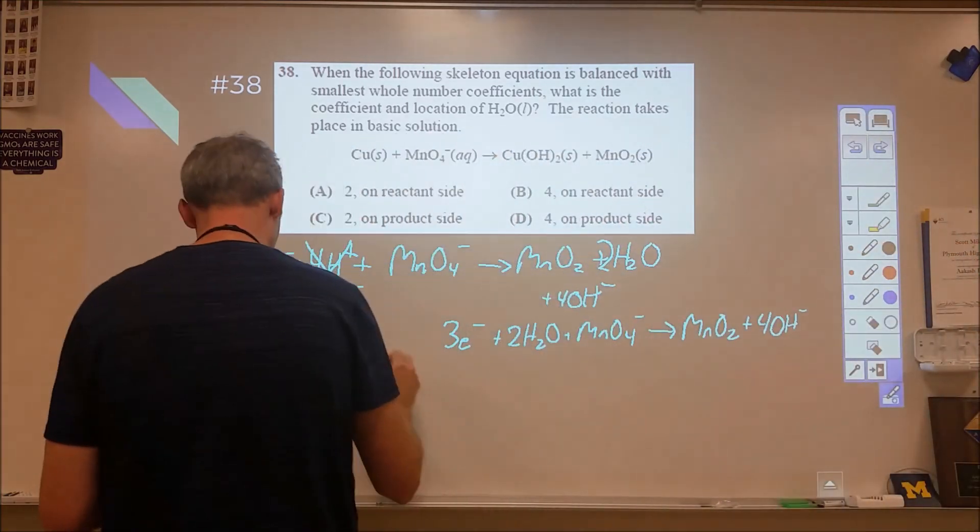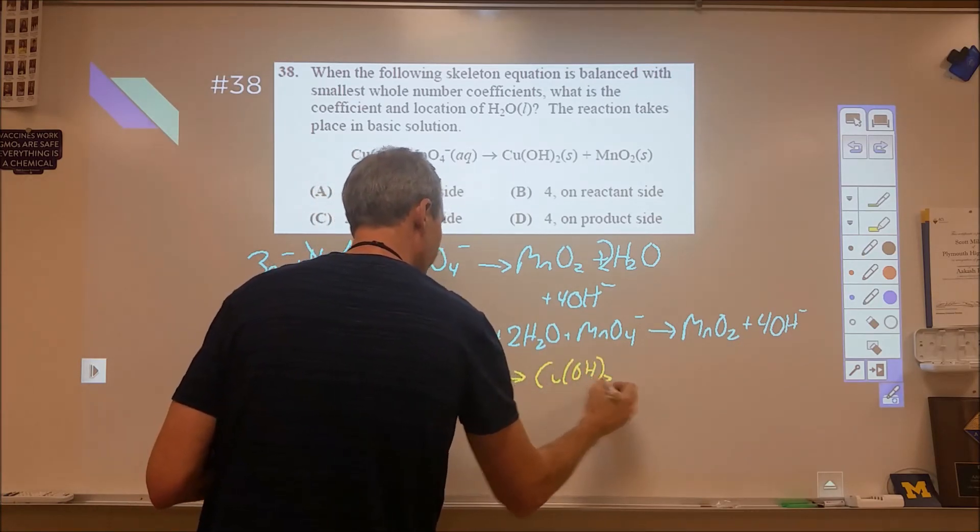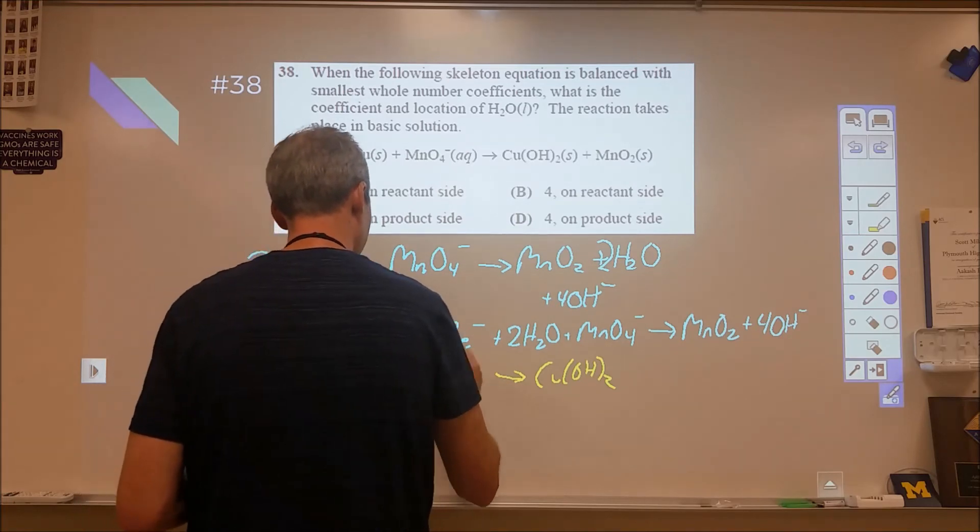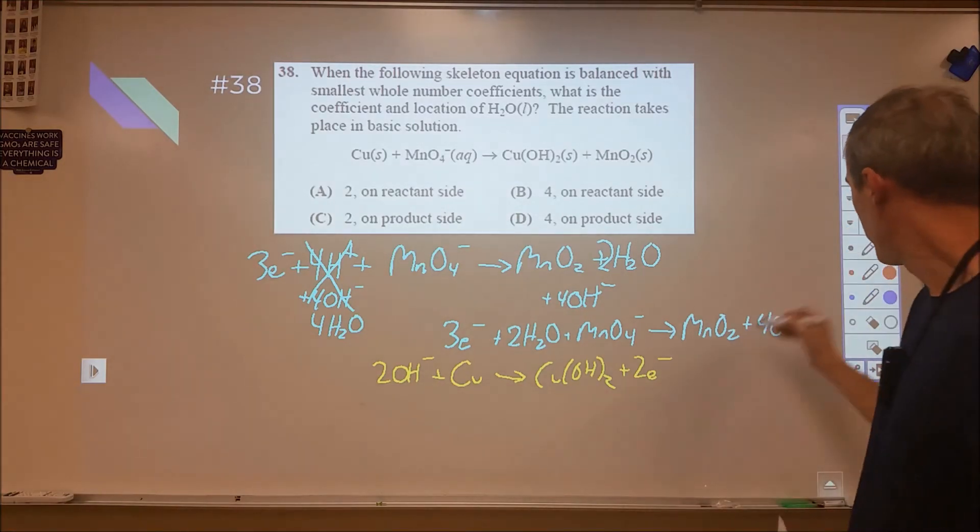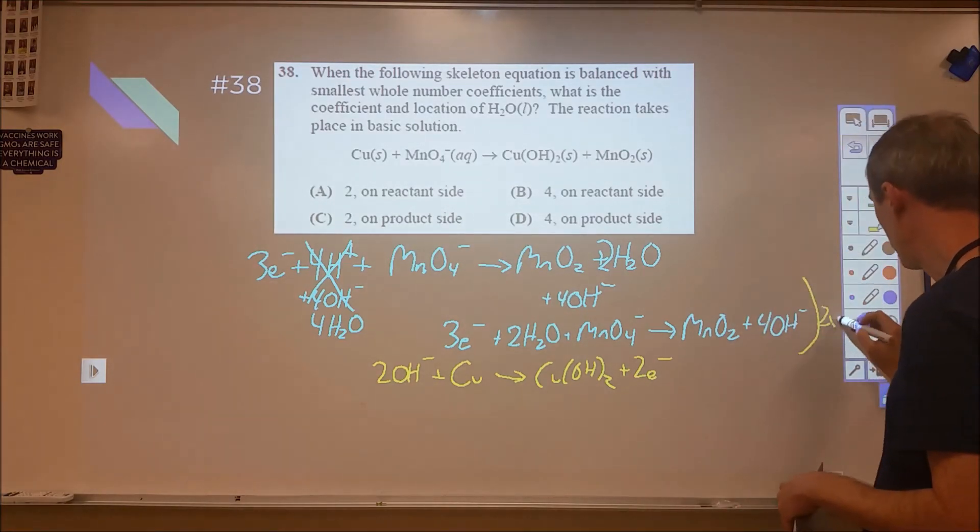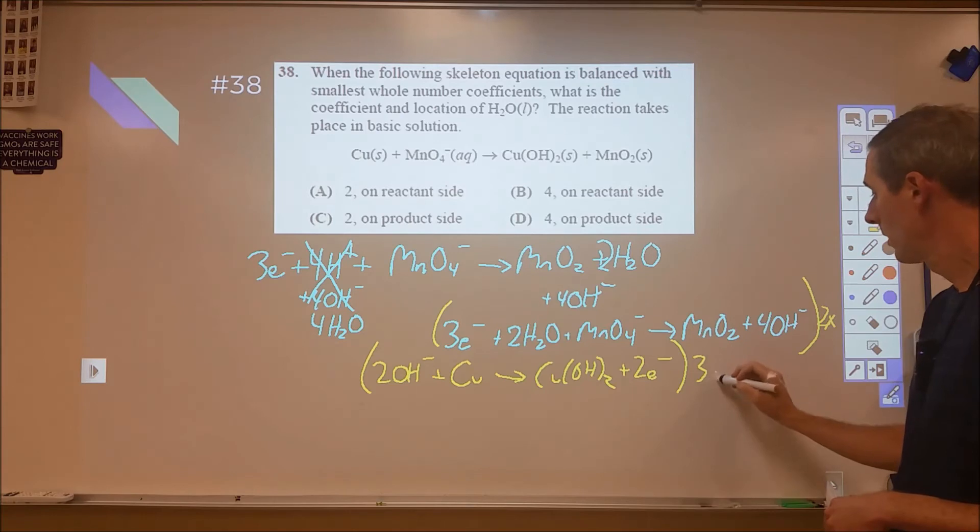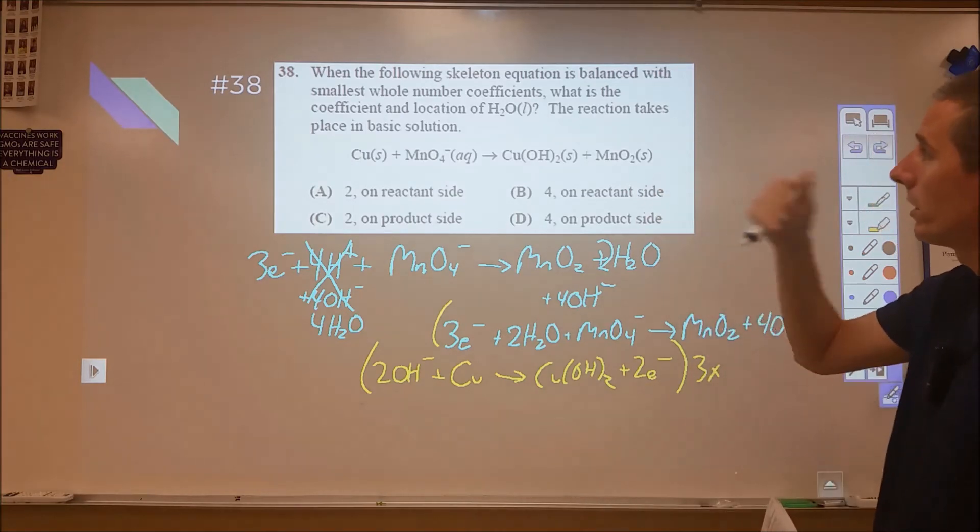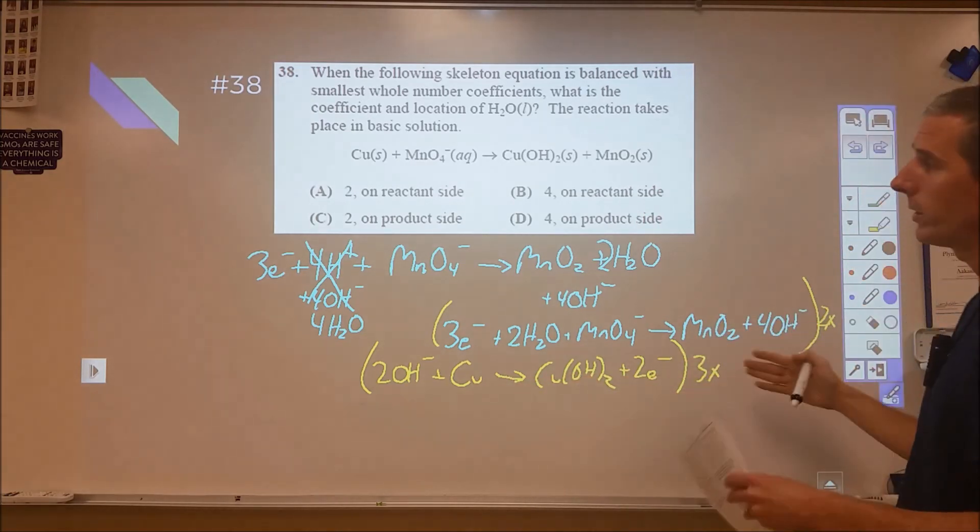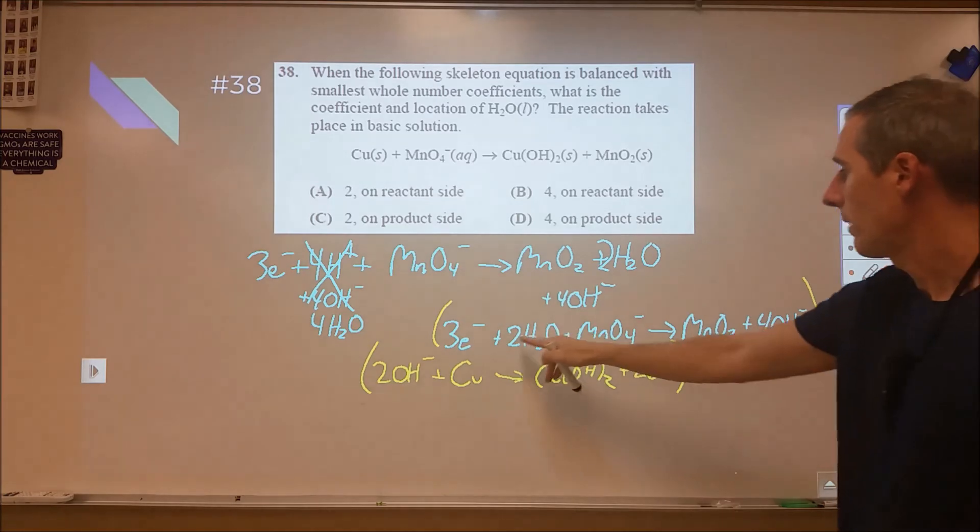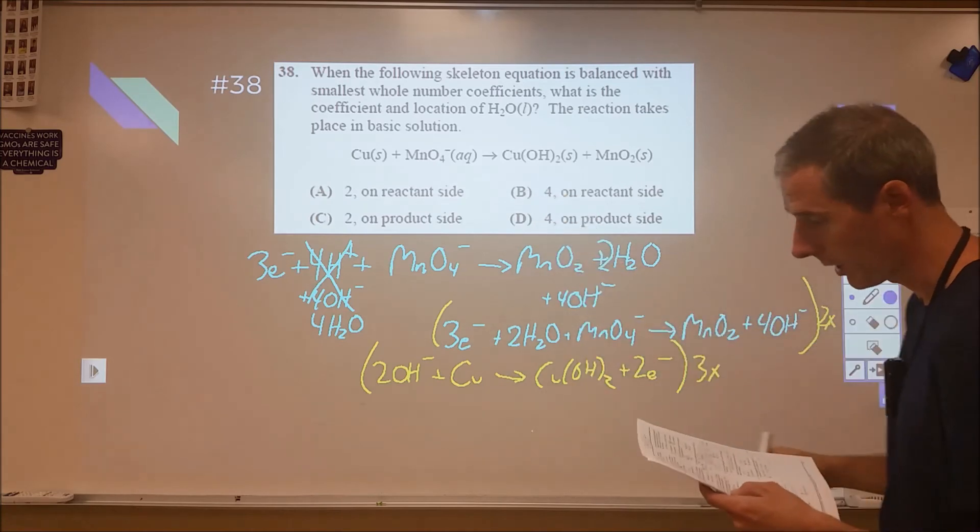And our second reaction, it's a little simpler. So, we have copper to copper hydroxide. To balance that, we can just go ahead and add the two hydroxides and the two electrons. After that, we're going to need to double all of this, and we're going to need to triple all of this. And then we're going to need to combine them all. So, it wants to know what the coefficient and the location of the water is. So, since this one doesn't have any water in it, we don't have to worry about that canceling with this. We're going to have two water molecules times two, so we're going to have four, and they're going to be on the reactant side. And so, B would be our correct choice there.